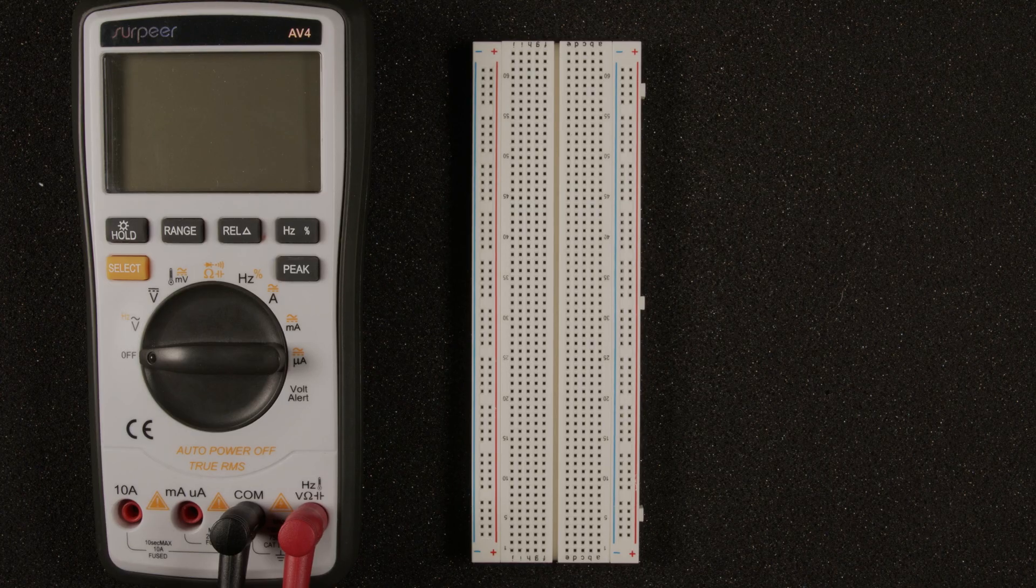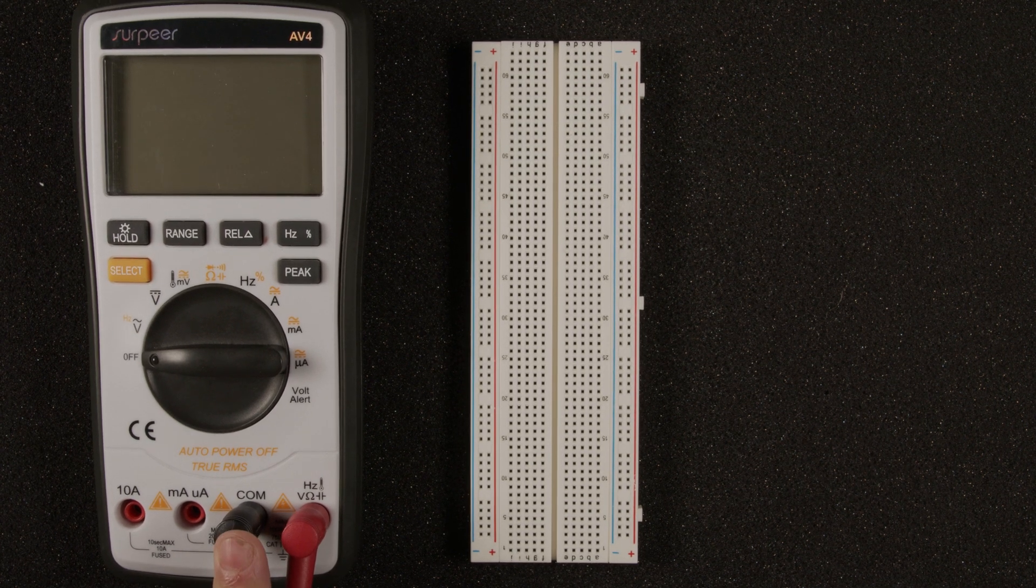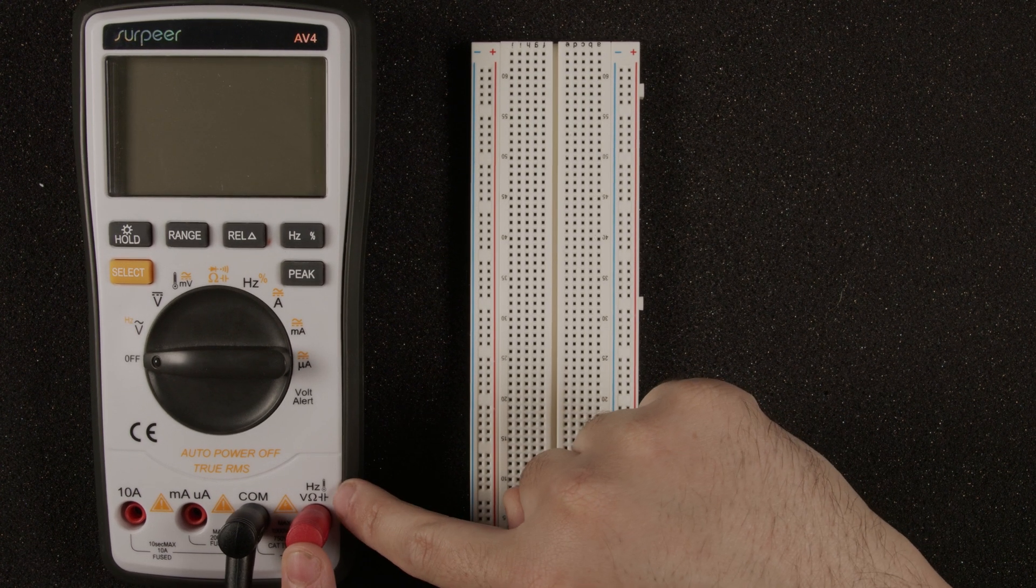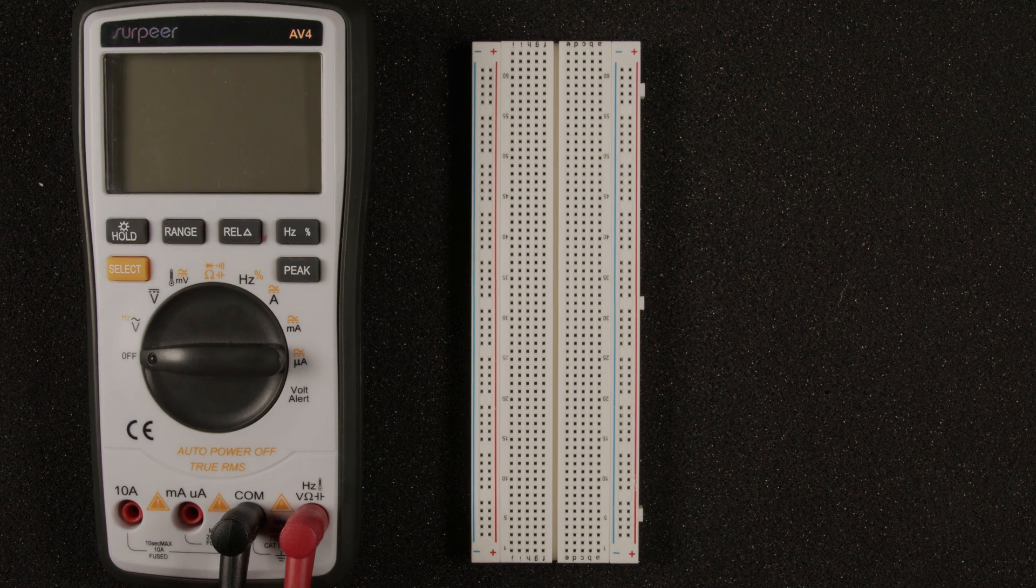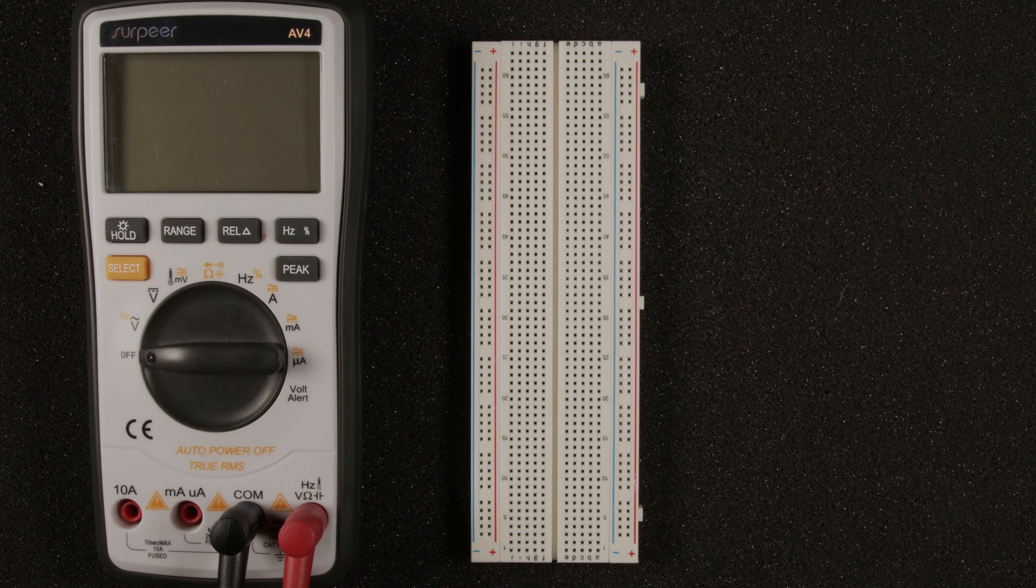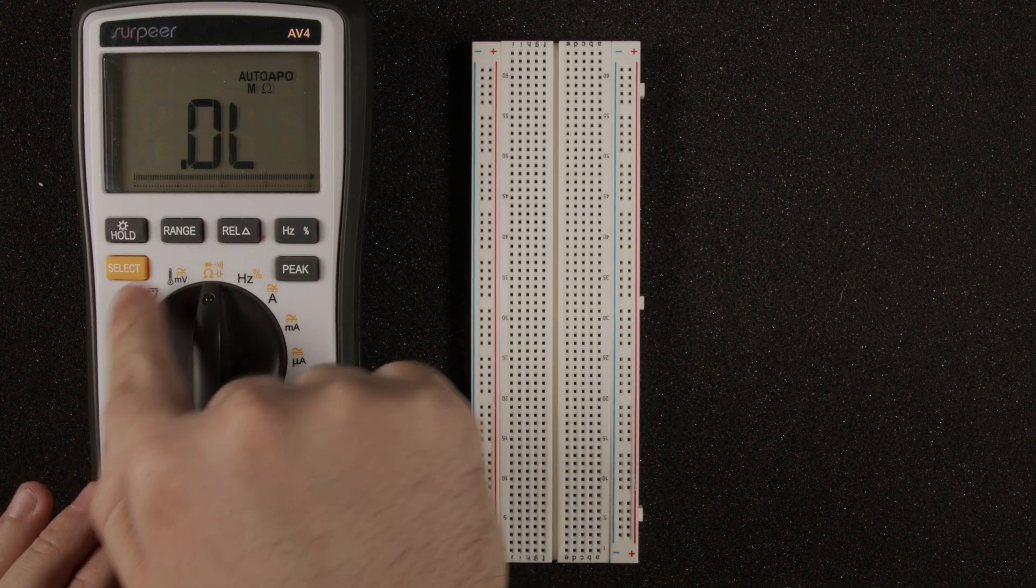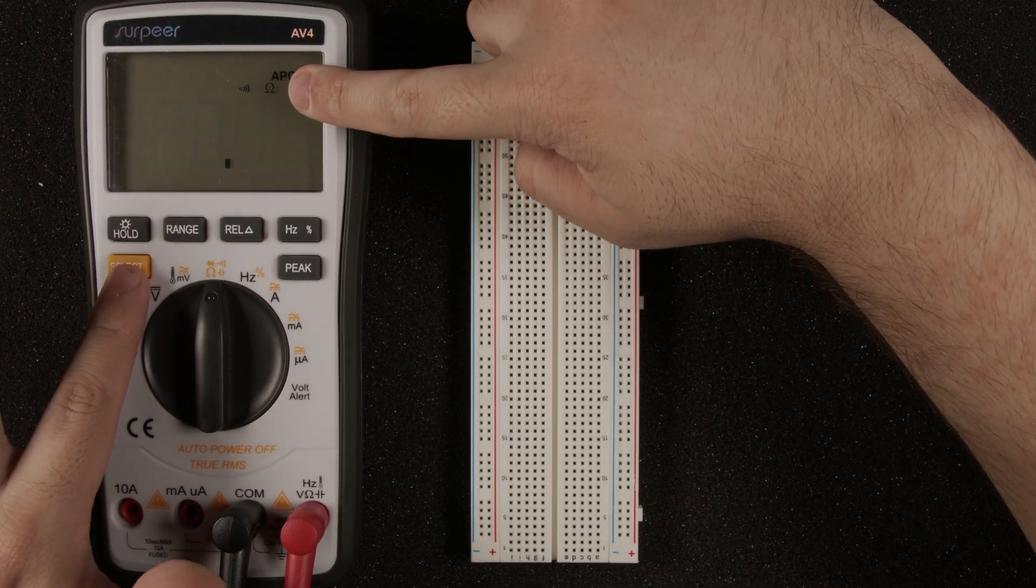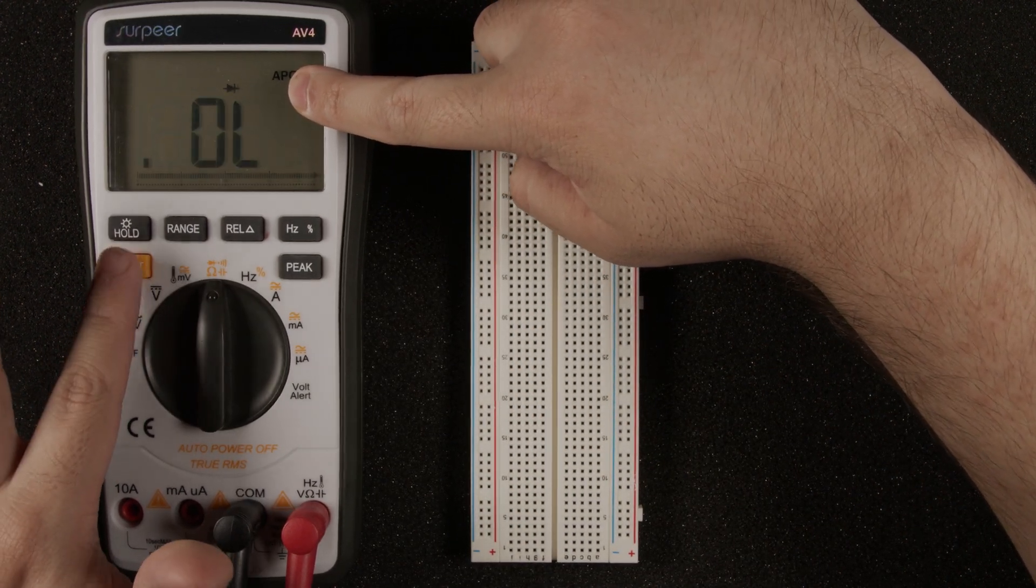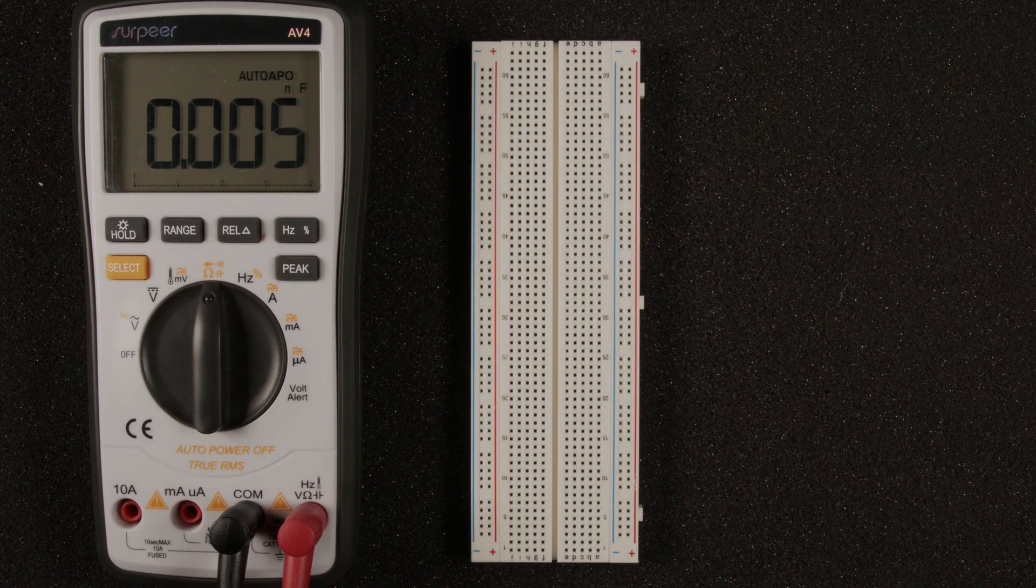Now let's look at how to measure capacitance values. For capacitance, once again, we want to make sure our probes are plugged into the correct terminal. The black one is in our common, and our little capacitance icon there is where our red probe is plugged into. So now let's go ahead and select the capacitance on our multimeter. For me, I'm going to turn it to where we were measuring ohms, and then I'm going to hit the select button until the capacitor option is enabled. I know that because it says nanofarads, which is a measure of capacitance.